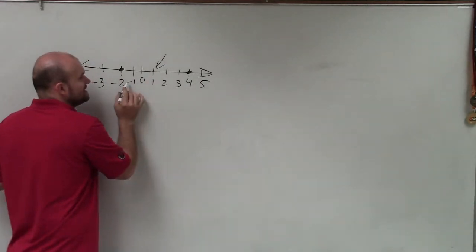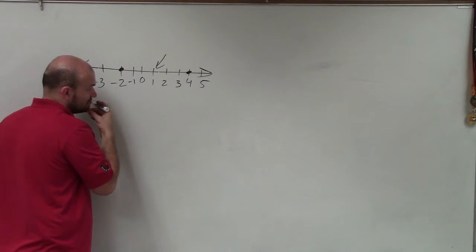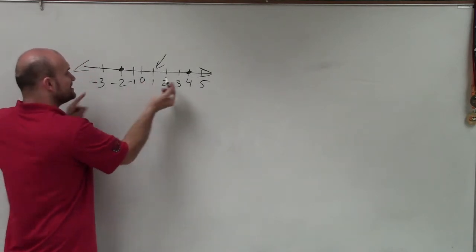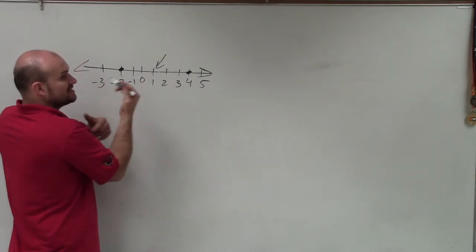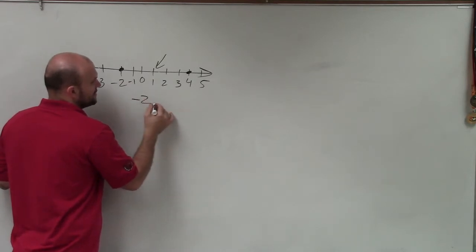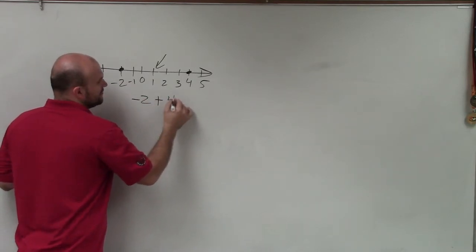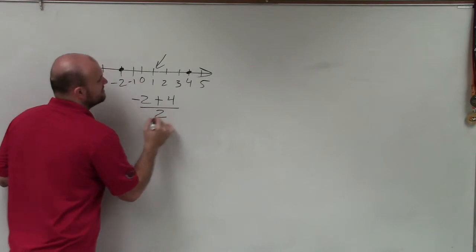Well, to do that, all you need to do is find the distance between those and divide it by 2. So one thing I can do is say negative 2 plus 4, then divide it by 2.